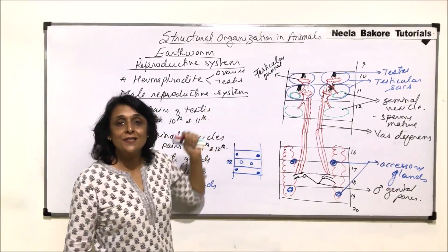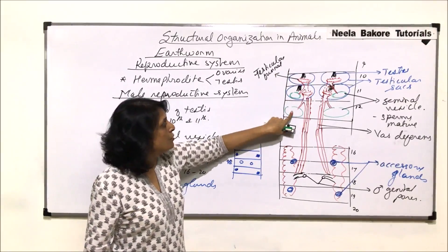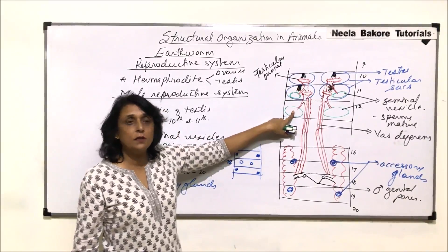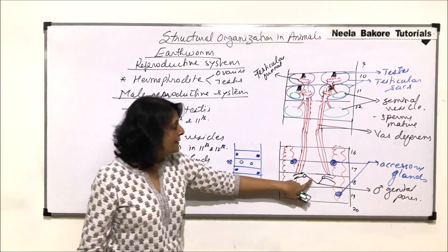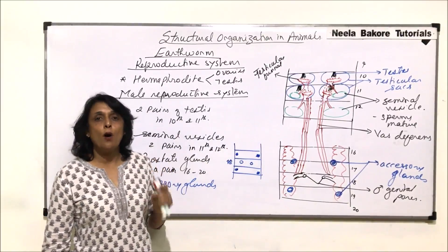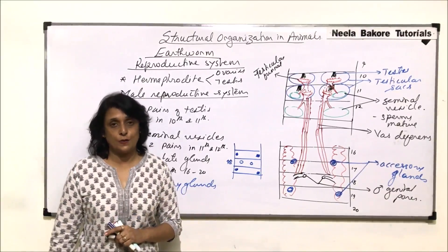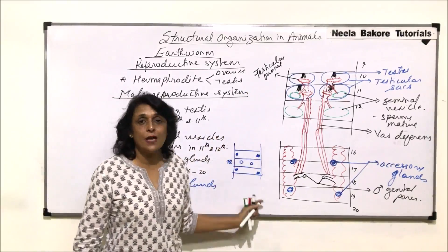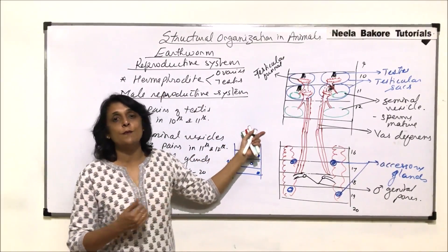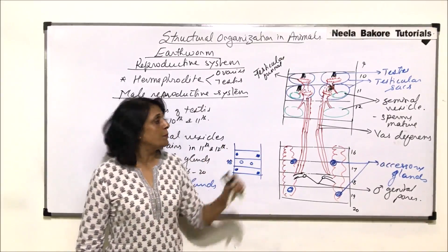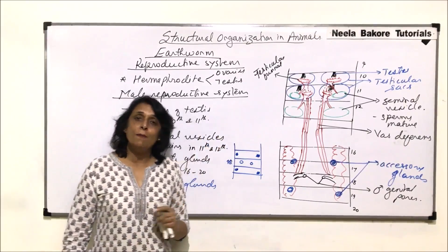To summarize, the male reproductive system comprises testes which produce sperms. Maturation takes place in the seminal vesicles. Sperms are then collected by a tube called vas deferens, a duct from the prostate joins it, and they open in the 18th segment as paired genital pores. As noted earlier, the earthworm is hermaphrodite — in the same worm we find both male and female reproductive systems. In the next part we will draw the female reproductive system.